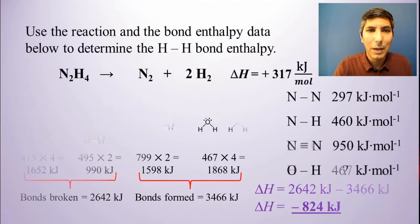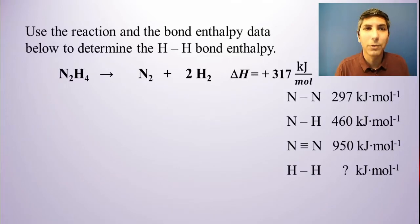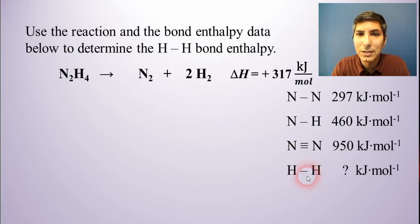Let's try another example. I want you to notice that this one's a little bit different, though. It says, use the reaction and the bond enthalpy data below to calculate the hydrogen-hydrogen bond enthalpy. So a little bit different strategy here. We're given the overall delta H. And we have to work backwards and find out what the hydrogen-hydrogen single bond enthalpy is. We don't know what that is according to the problem.